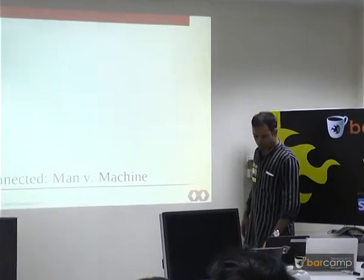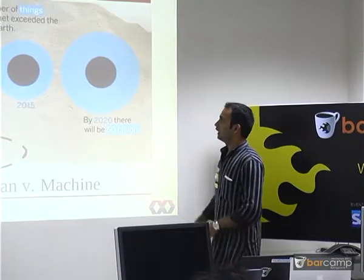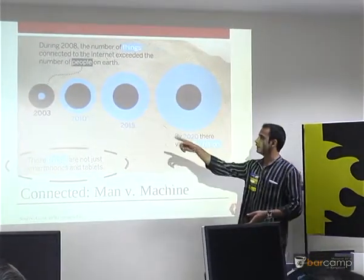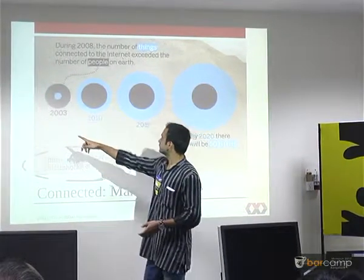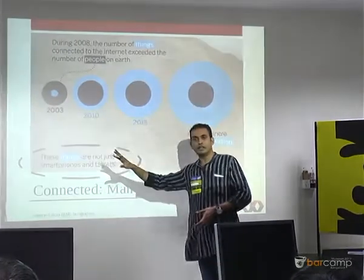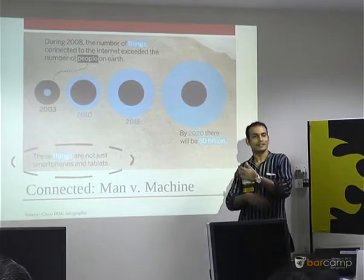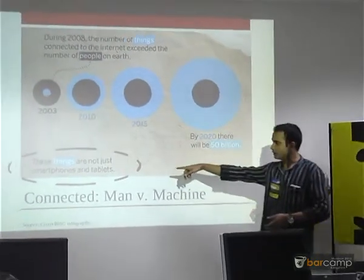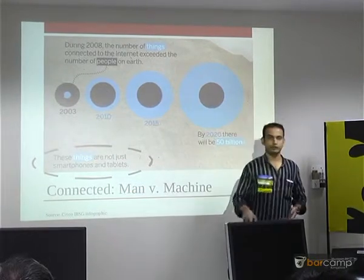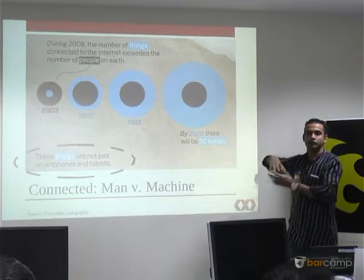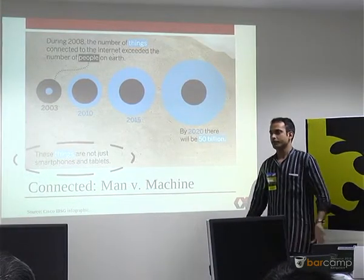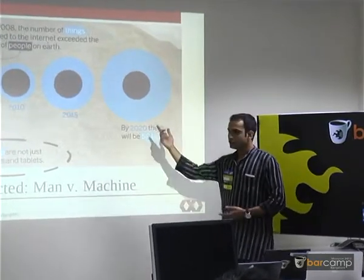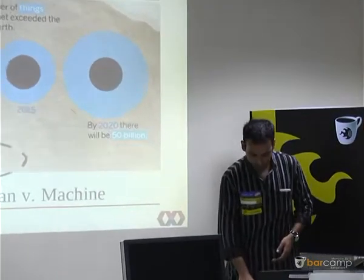This is something that really caught my eye — when you start looking at the number of people connected to the internet versus the number of devices connected to the internet. Around 2008 was the point when the number of devices connected to the internet surpassed the number of people connected to the internet. And that number is going to exponentially grow over time. These things are not just smartphones and tablets — if you look at the disparity in growth, it's mostly devices that are taking off. It can't just be smartphones and tablets.